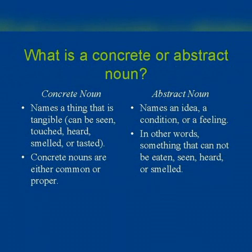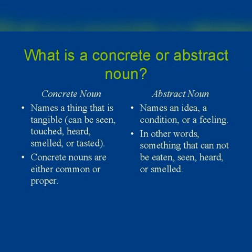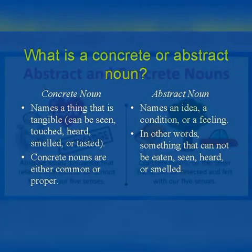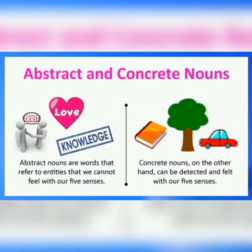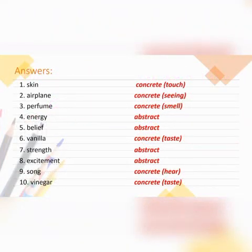The next kind is concrete and abstract nouns. Concrete nouns are names of things that are tangible and can be touched, heard, or smelled. Things which we can touch, smell, or taste are concrete nouns. Abstract nouns are those which we cannot touch — they are feelings. Abstract nouns refer to entities that cannot be felt with our five senses, like feelings such as happy or sad. Concrete nouns are things we can actually feel and touch.